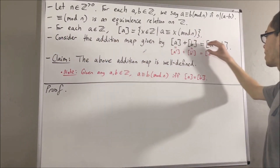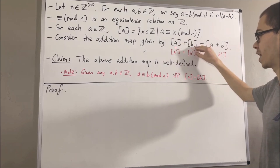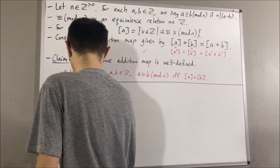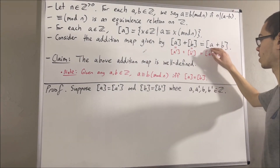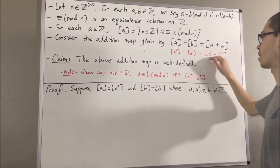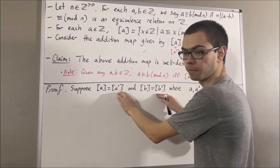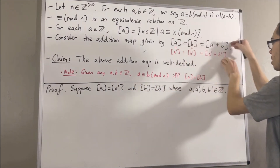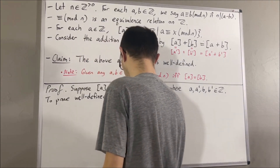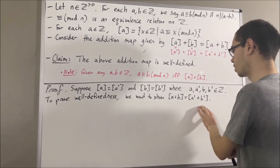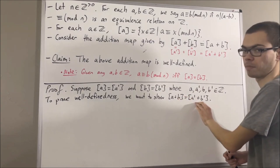To prove that this mapping is well defined, let's suppose the equivalence class of a is equal to the equivalence class of a prime, and let's suppose the equivalence class of b is equal to the equivalence class of b prime. From here, we want to show that the equivalence class of a plus b is equal to the equivalence class of a prime plus b prime. That will tell us that no matter how we represent these two in a different way, the result yielded by the addition is always going to be the same value. And to show this, it suffices to show, by this result, that a plus b is congruent to a prime plus b prime modulo n.